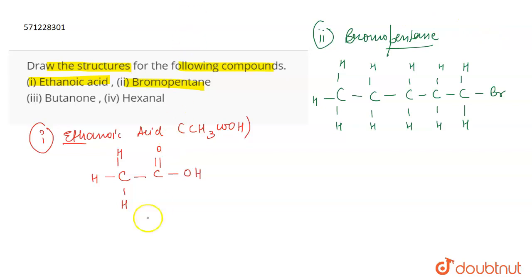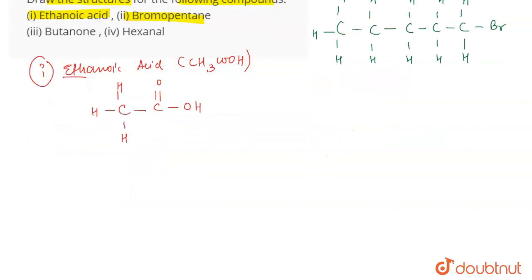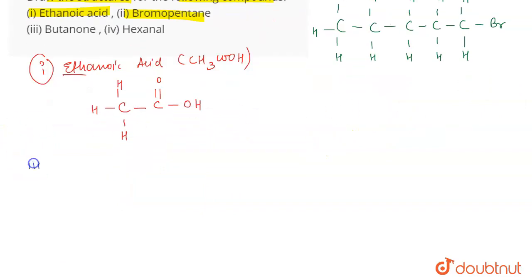Now coming on to the third one, the third one is butanone. So butanone has a formula of CH3-CH2-CO-CH3, right? So butanone means there is a ketonic group.